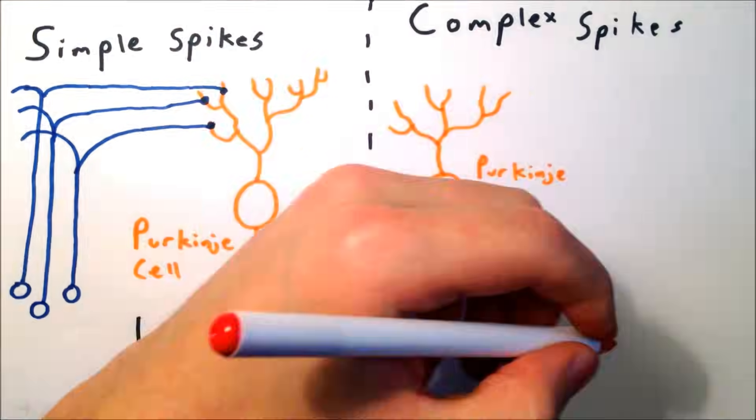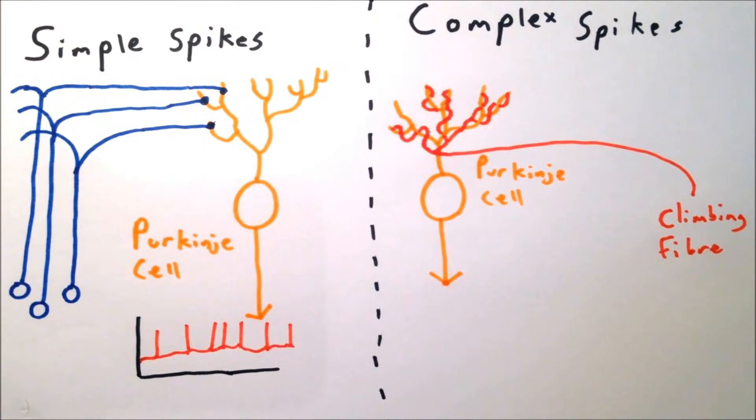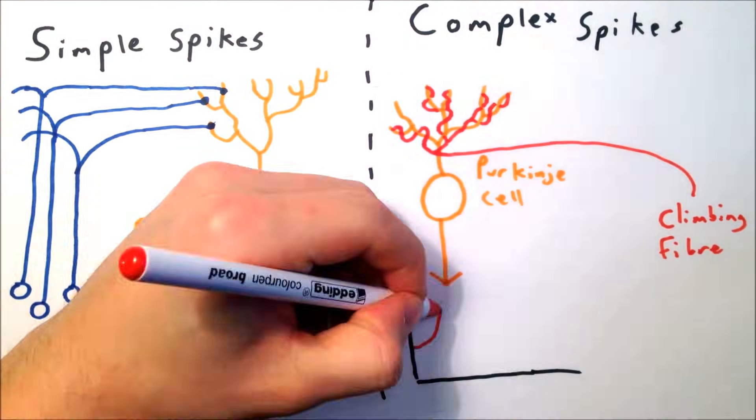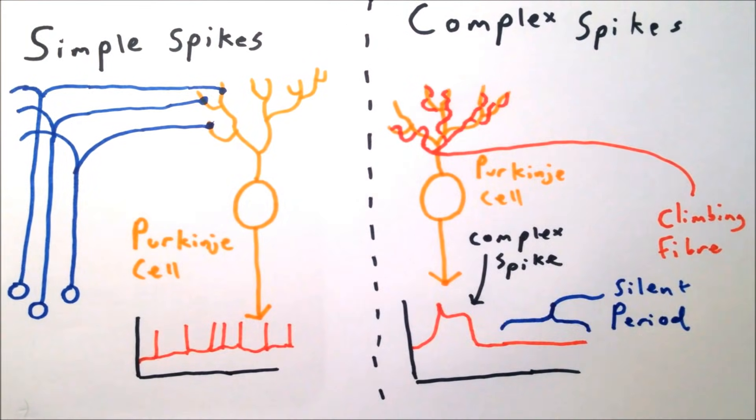In contrast, complex spikes occur when the Purkinje cells are stimulated by the climbing fibers. The simultaneous activation of hundreds of synapses causes a broad, atypical spike, followed by a silent period with no spikes.